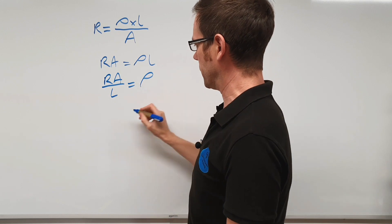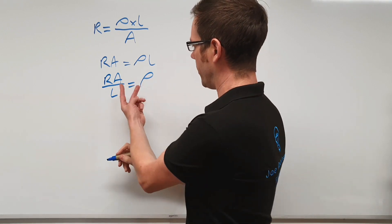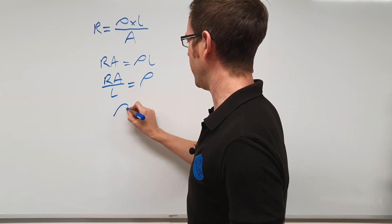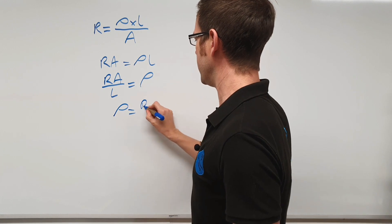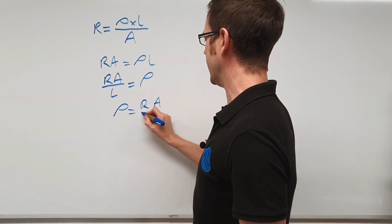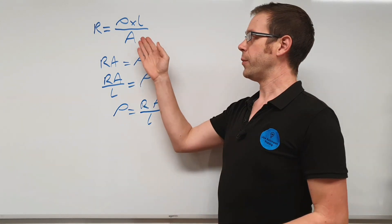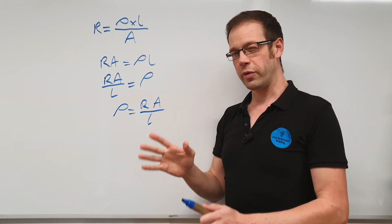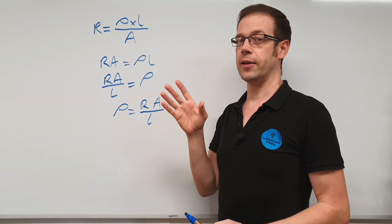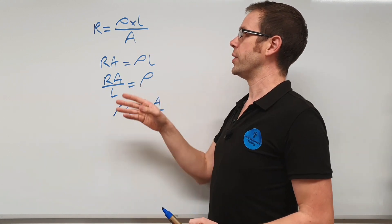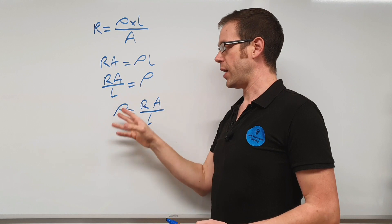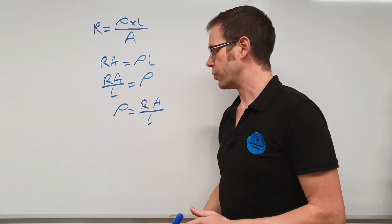And just for the sake of clarity, we'll just swap these over. So we've got rho is equal to resistance times by cross-sectional area divided by length. Again, if you're wondering where this formula suddenly sprang from, don't worry too much about it. There are other videos on the channel that go into resistance and resistivity in a lot more depth, but this is just to illustrate where this unit actually comes from.